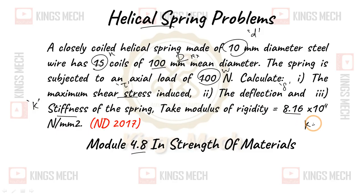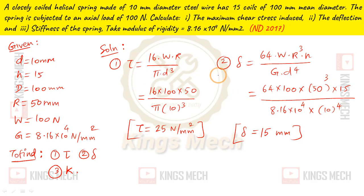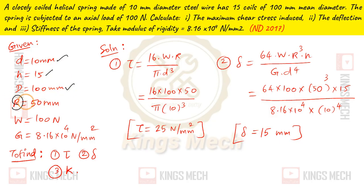Stiffness K we find as W by delta, and for that we first find delta. The given values are: wire diameter d = 10 mm, number of coils N = 15, mean diameter D = 100 mm, so radius R = 50 mm.